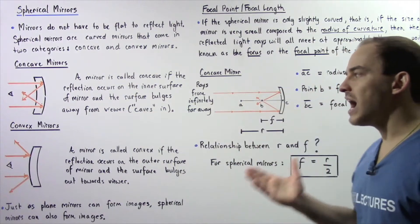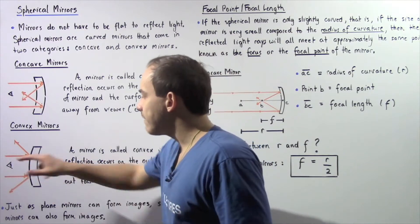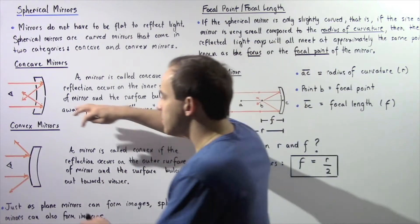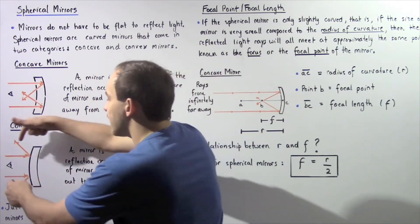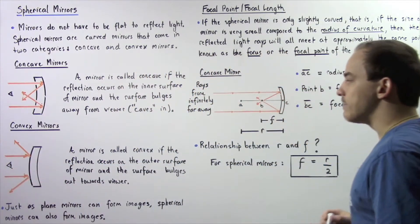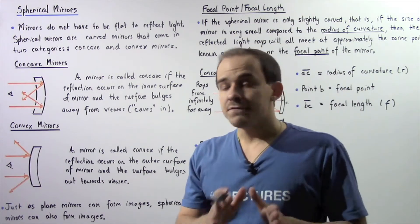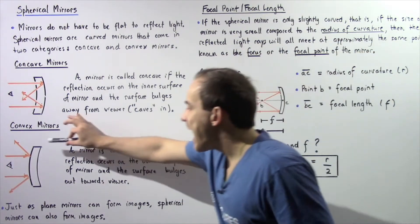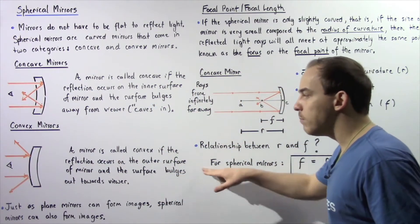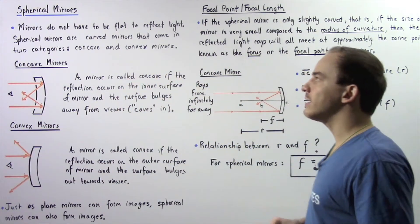Now let's move on to a convex spherical mirror. Once again, we have the viewer who is found on the left side of the mirror, and the rays are coming in from the left side and are reflecting as shown. A mirror is defined as a convex mirror if the reflection takes place on the outer surface of the mirror and the center of the mirror bulges towards the viewer.